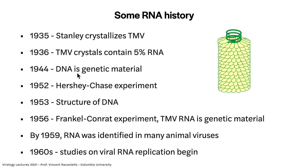In 1944, DNA was shown to be genetic material. In 1952, the Hershey-Chase experiment showed that the DNA of a bacteriophage is the genetic material. The structure of DNA was solved in 1953 — a banner year for science. In 1956, the Fraenkel-Conrat experiment showed that tobacco mosaic virus RNA is genetic material. And by 1959, many RNA viruses had been discovered.